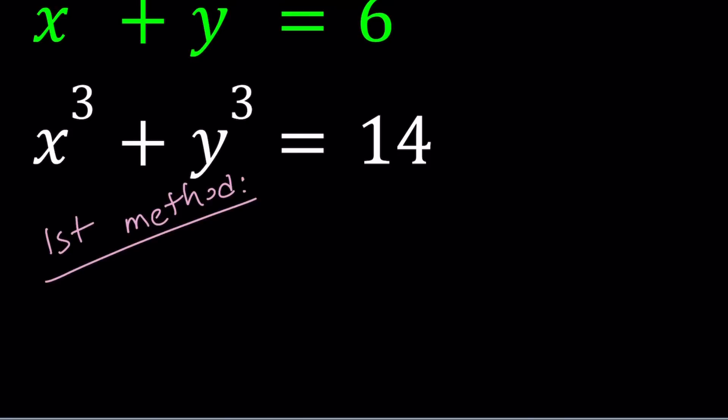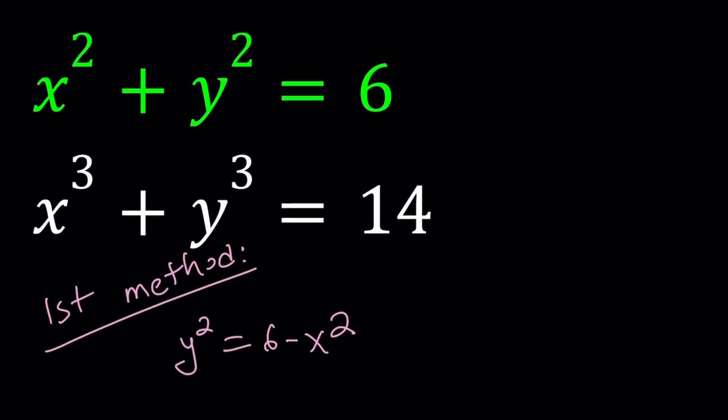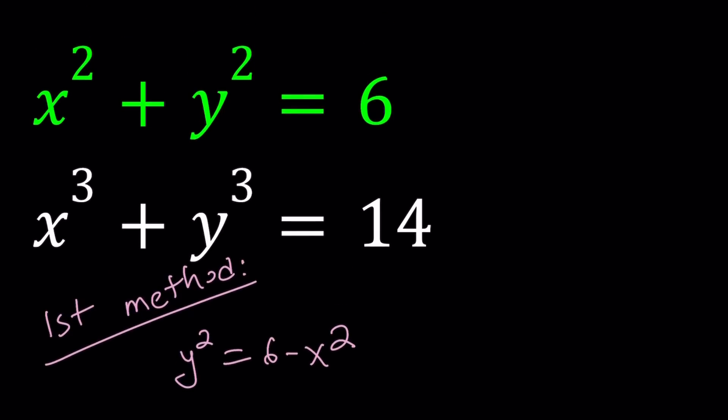So here's what I can do. I can go ahead and isolate y squared from the first equation. So I can subtract x squared from both sides. y squared can be written as 6 minus x squared.